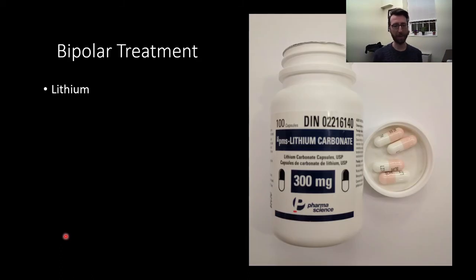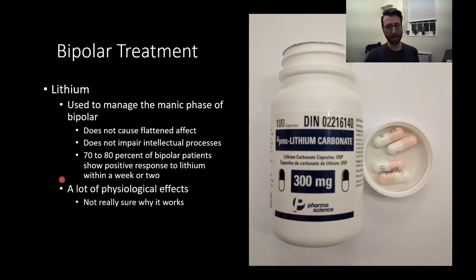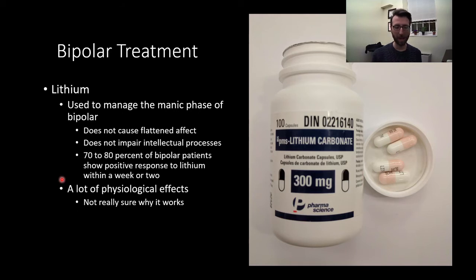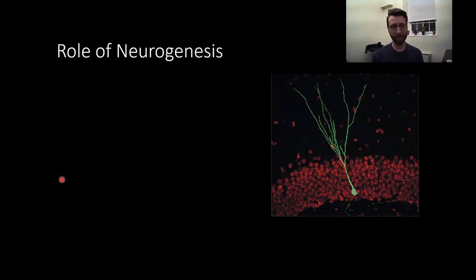The pharmacological treatment for bipolar disorder is lithium, which is used to manage the manic phase. It does not produce flattened affect or impair intellectual processes, and 70–80% of bipolar patients respond well within about a week or two. It produces many physiological effects, but we're not really sure why it helps — we're just sure that it does. People taking it long-term must undergo frequent blood tests, because lithium can affect kidney and thyroid function.